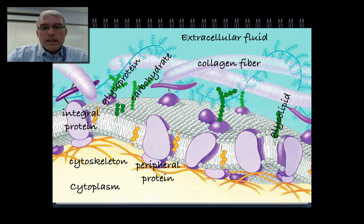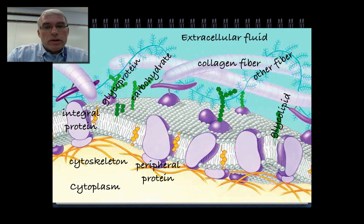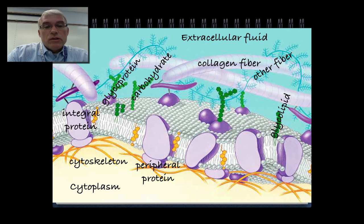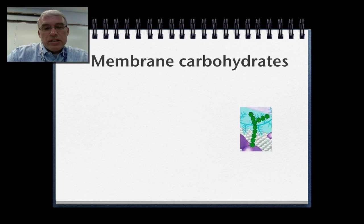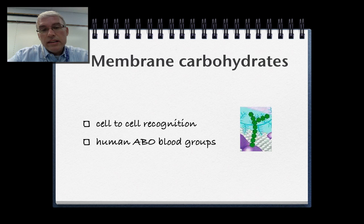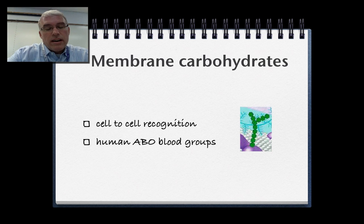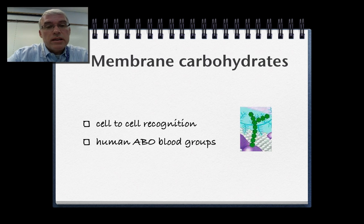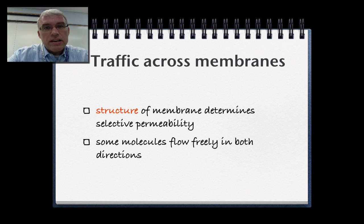On the outside in the extracellular matrix surrounding animal cells, there are fibers like collagen fibers that lock animal cells in place or loosely attach them to other cells, modifying how they position themselves in tissues. Those membrane carbohydrates are responsible for cell-to-cell recognition — animal cells use them to tell each other apart. This is why humans differ in ABO blood types: type A, B, O, or AB blood types differ in the type and size of carbohydrates attached to their red blood cells.